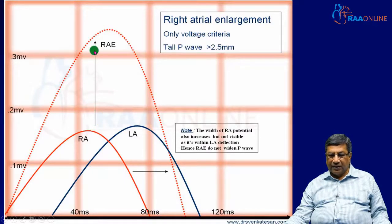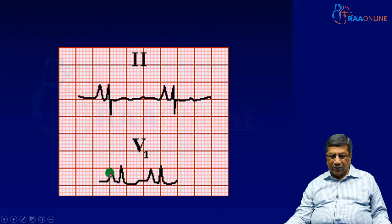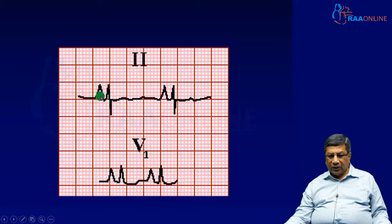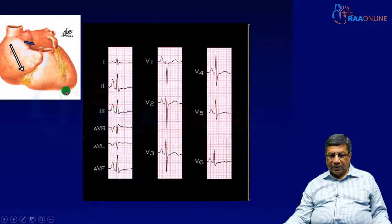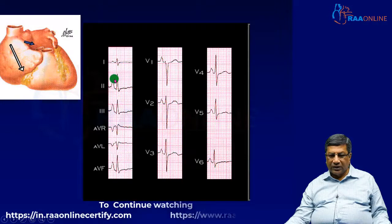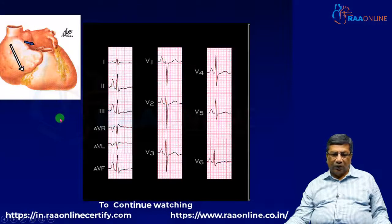Therefore, right atrial enlargement increases only the height of the P wave, not the width. The rightward and anterior forces are exaggerated. The P wave in L2 is tall but not wide, and the initial positive component of the P wave in V1 is exaggerated to more than 1.5 millimeters. The P wave height in L2 is more than 2.5 millimeters with normal duration — not exceeding 2.5 small squares horizontally. These are the criteria for right atrial enlargement.